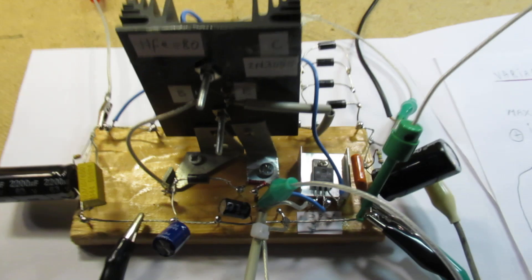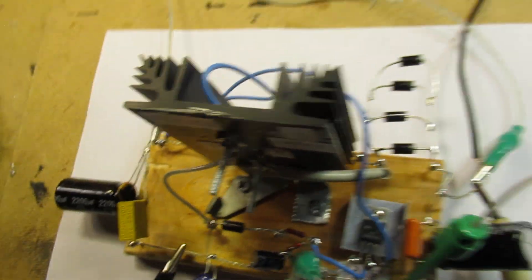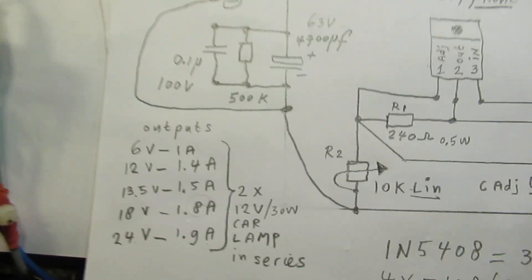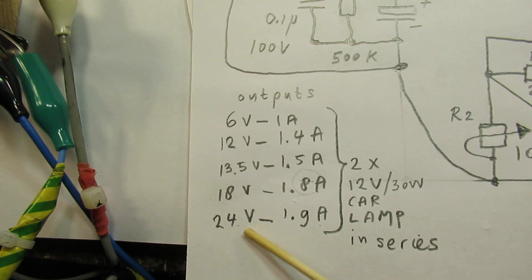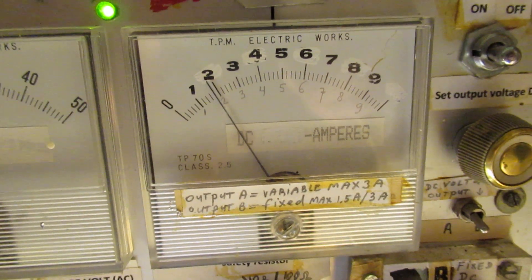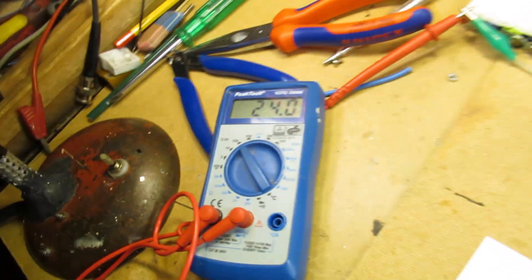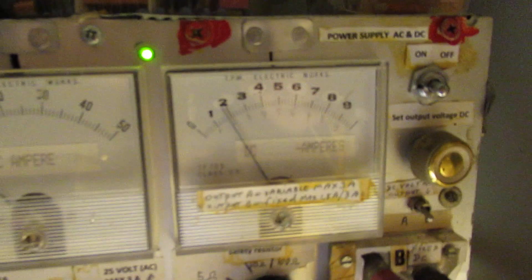So, this is the circuit. Good big heatsink. These are the values. Output values. 6 volt 1 ampere. 24 volt 1.9 ampere. At the moment it's driven at 30 volts.